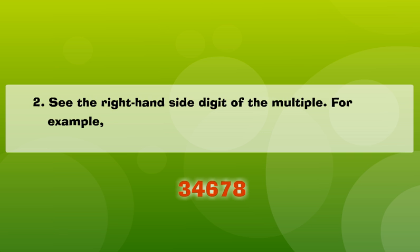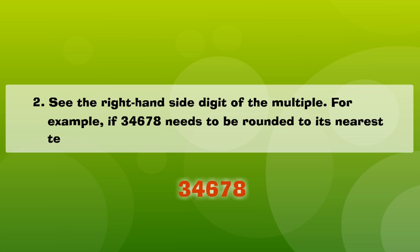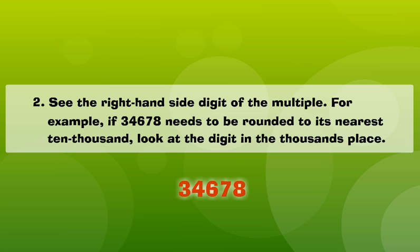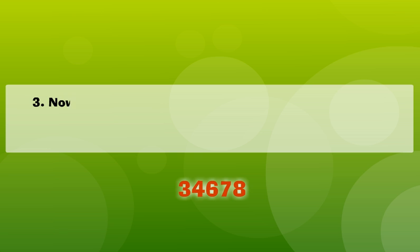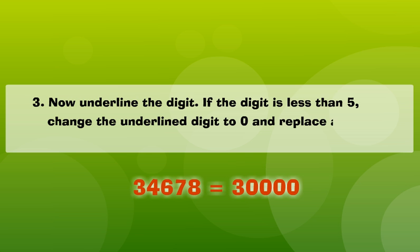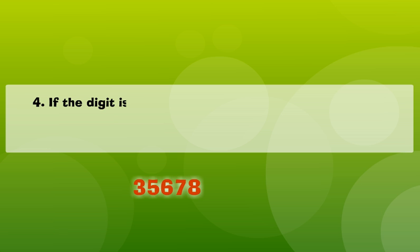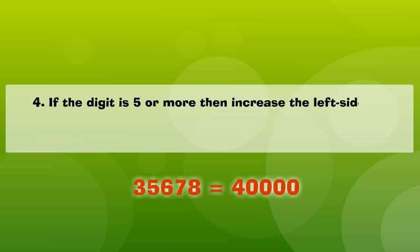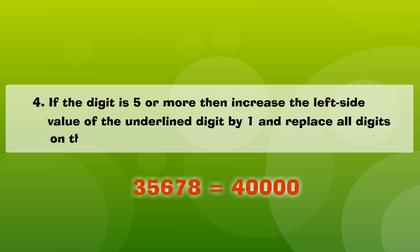For example, if 34,678 needs to be rounded off to its nearest ten thousand, look at the digit in the thousands place and underline the digit. If the digit is less than 5, change the underlined digit to 0 and replace all digits on its right side to 0. If the digit is 5 or more, increase the left side value of the underlined digit by 1 and replace all digits on the right side to 0.